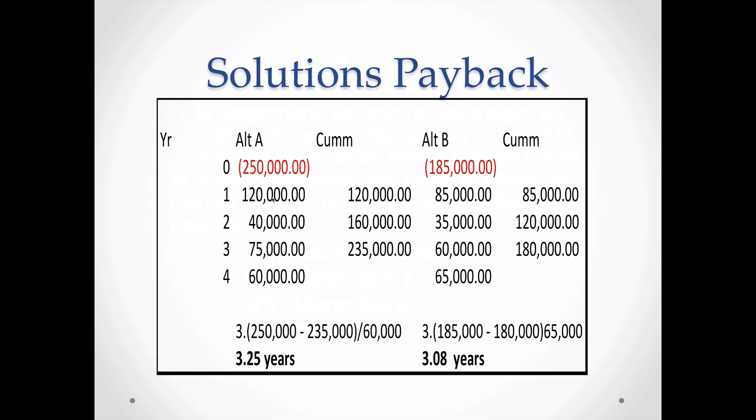Somewhere after year three the investment is paid back — adding $60,000 to $235,000 exceeds $250,000. So it's 3-point-something years. We calculate: $250,000 minus $235,000 leaves $15,000 remaining, and we divide that by the year four cash flow of $60,000, since cash flows are assumed distributed evenly throughout the year. That gives us 3.25 years for Alternative A.